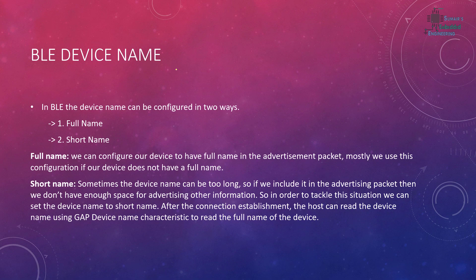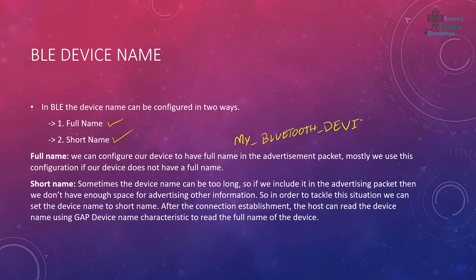A BLE device has two types of name: the device name can be a full name or a short name. If your device doesn't have a big name — for example, in my case I'm setting the device name as 'sam bt', which is just a six-byte name — that's not a big name. But if your device has a long name like 'My Bluetooth Device', you can just select a short name.